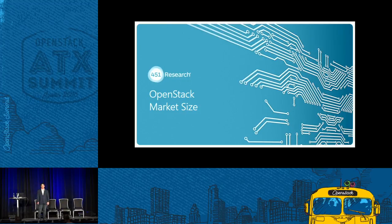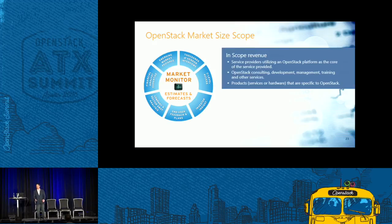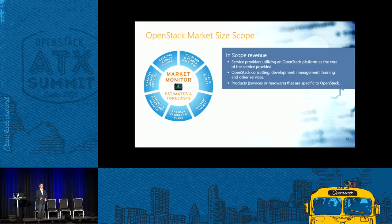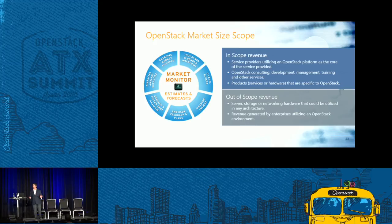We have this OpenStack Market Monitor with bottoms-up estimates from over 60 vendors now. In scope: service providers using OpenStack at their core, consulting, development services, distros, training, and purpose-built hardware products for OpenStack. What's not included: generic hardware providers like commodity server or storage vendors. That's why the number looks small compared to the overall hosting market. PayPal and eBay use OpenStack to run their businesses, but their revenue isn't included either.